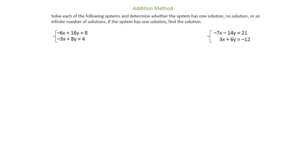We're going to look at the system on the left first: negative 6x plus 16y equals 8 and negative 3x plus 8y equals 4. We're using addition method, so we're going to choose a variable that we can swap the coefficients on. We're going to choose the x's because those numbers are smaller.